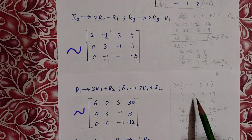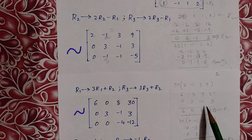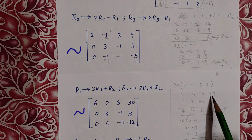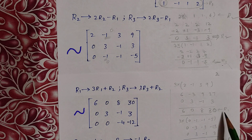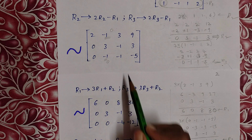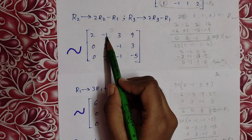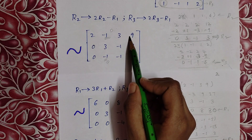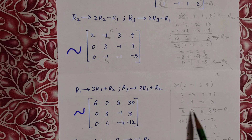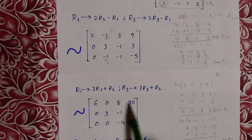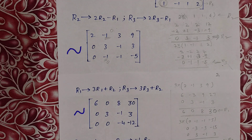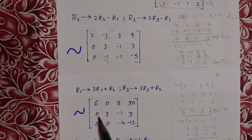Completing the R1 operation: 0 plus 0 = 0, -3 plus 3 = 0, 9 minus 1 = 8, 27 plus 3 = 30. So R1 [2, -1, 3 | 9] is replaced with [6, 0, 8 | 30]. R2 row values don't change.